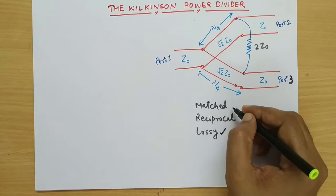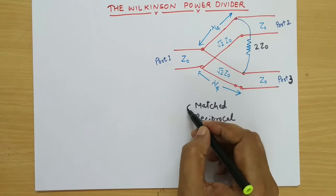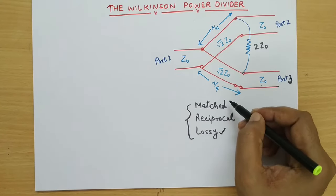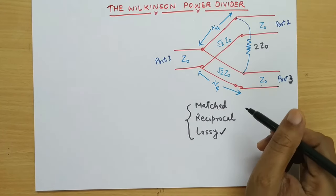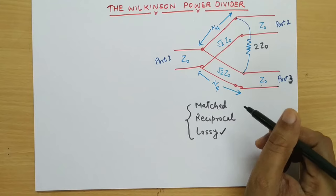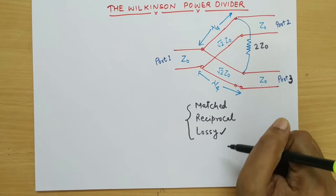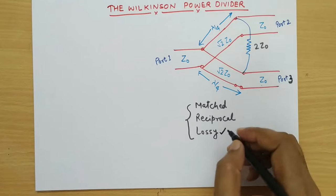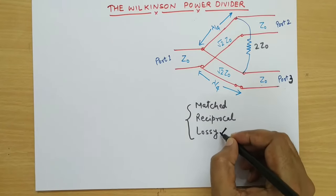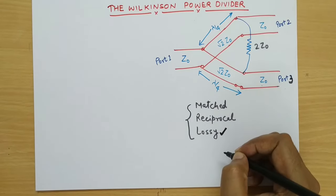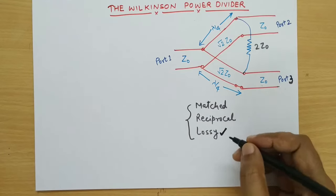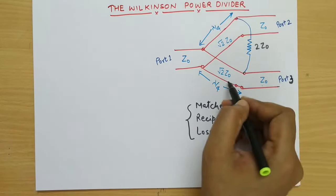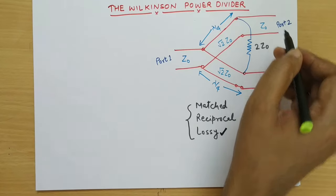We use this lossy property to dissipate the reflected power so that it fulfills all the criteria of a three-port network. We know that all three conditions — matching, reciprocity and lossless — cannot stand together; we have to compromise with one property. Here we have compromised with the lossless property and made a lossy network, but this loss will happen only for the reflected power from port 2 or port 3.